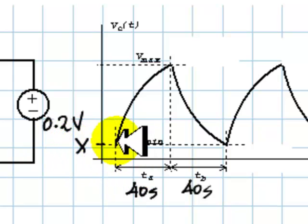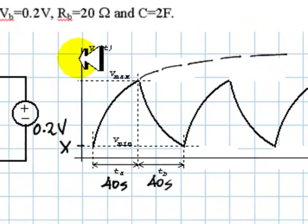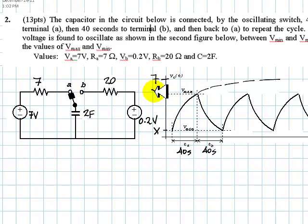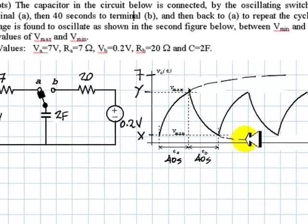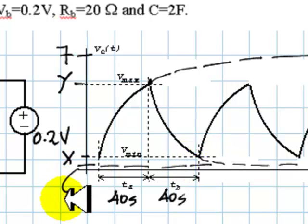Starting from X, it charges trying to reach 7 volts, but it stops short of reaching that goal because we moved the switch over. It reaches the value Y — Vmax. Then at that point we switch it over to the discharging circuit. From Y, the voltage in the capacitor decays, trying to reach 0.2 volts, going lower and lower and reaching a certain voltage — back down to Vmin. What is the time constant of charging? Tau is RC. When charging, tau is 2 times 7, that is 14 seconds.